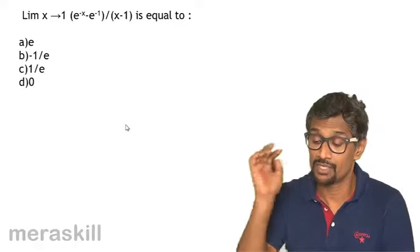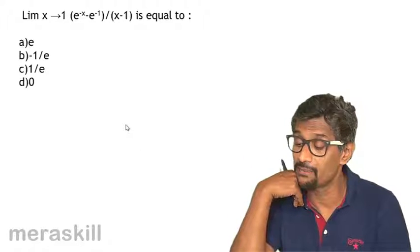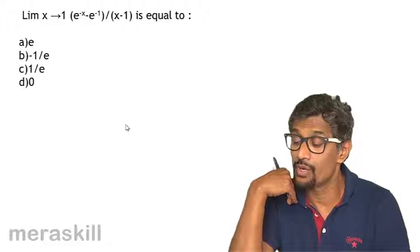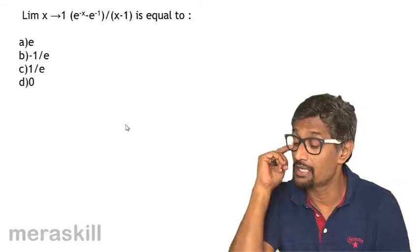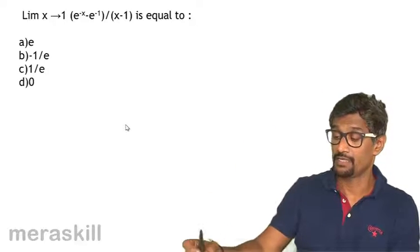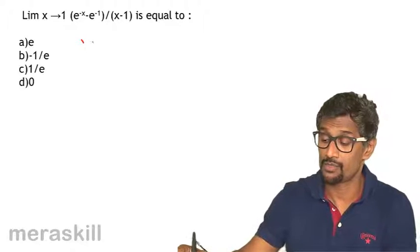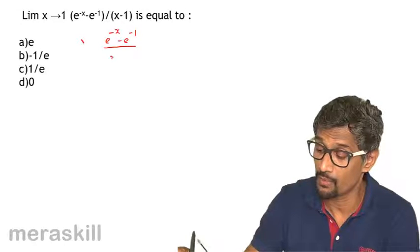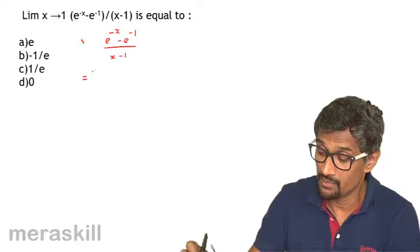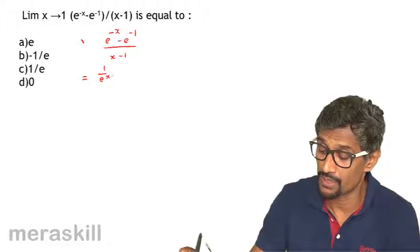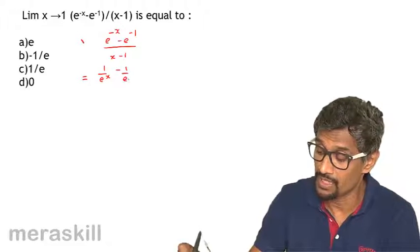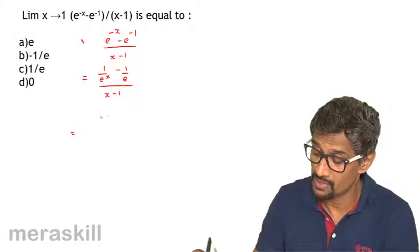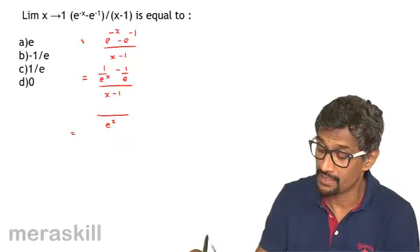Next we have the limit of (e^(-x) - e^(-1)) divided by (x - 1) as x tends to 1. We can rewrite this as (1/e^x - 1/e) upon (x - 1), and taking the LCM of e^x and e in the numerator gives us (e - e^x) upon e^x, all divided by (x - 1).